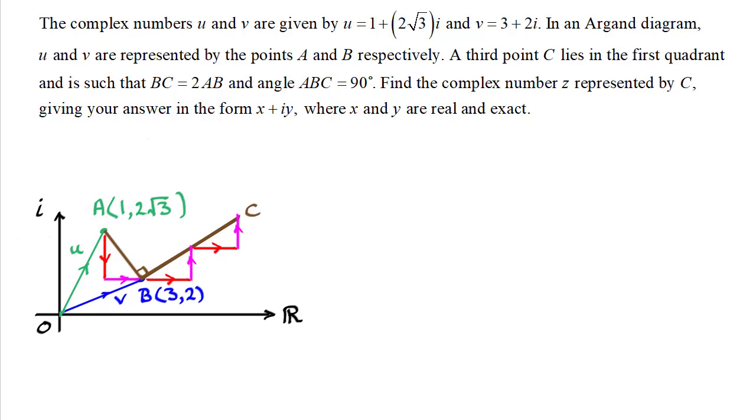So all I need to do now is just work out what these displacements are. Once I've got that, I just need to go from o to b, three plus two i, and then add on two lots of the red displacement, plus two lots of the magenta displacement. That'll be in the i direction.